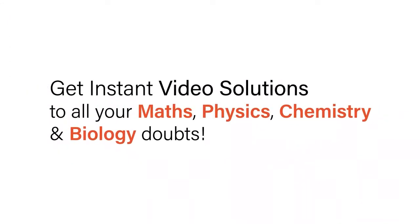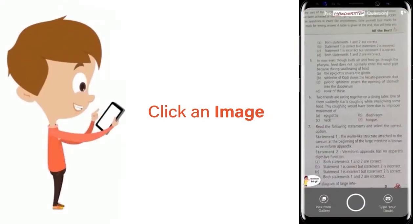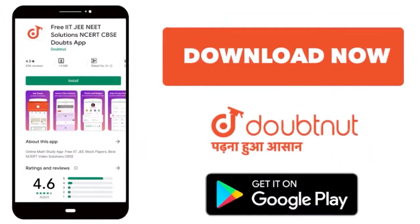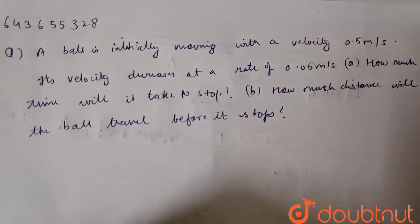With Doubtnet, get instant video solutions to all your maths, physics, chemistry and biology doubts. Just click the image of the question, crop the question, and get instant video solution. Download Doubtnet app today. Question: A ball is initially moving